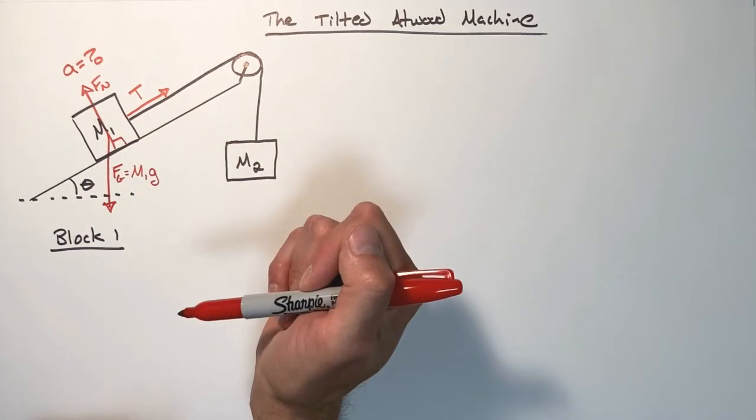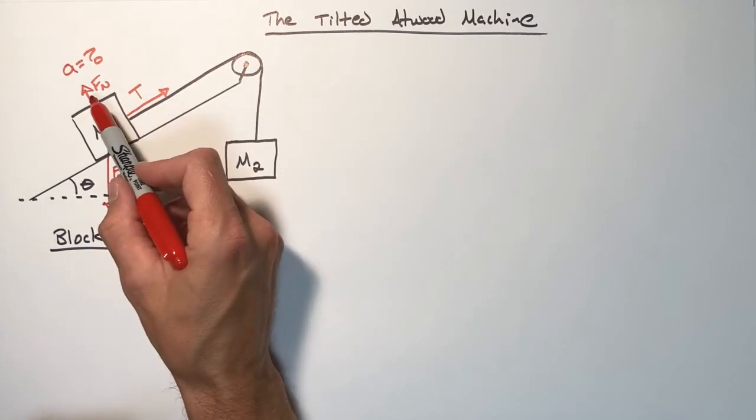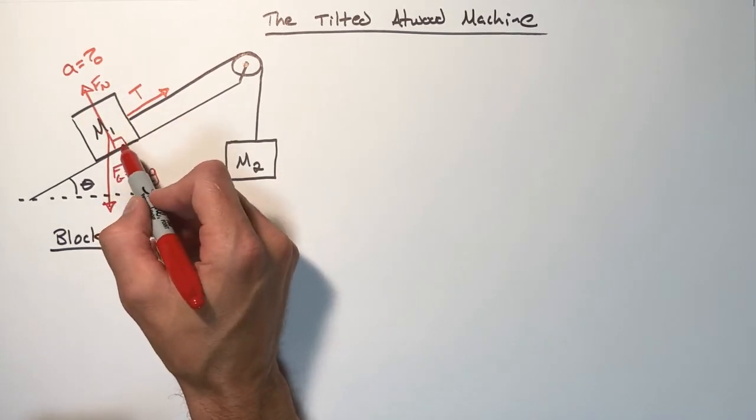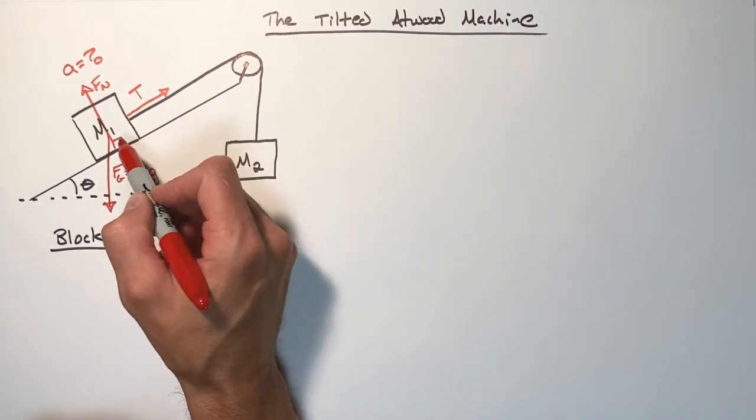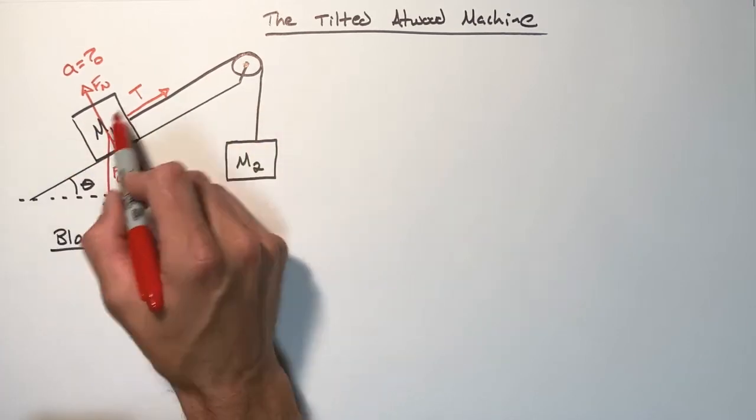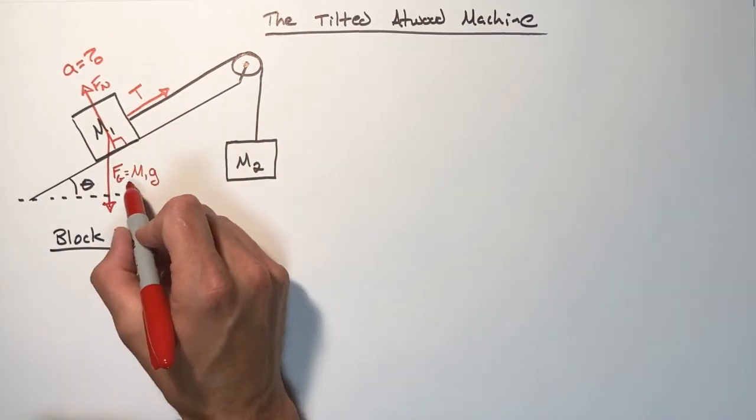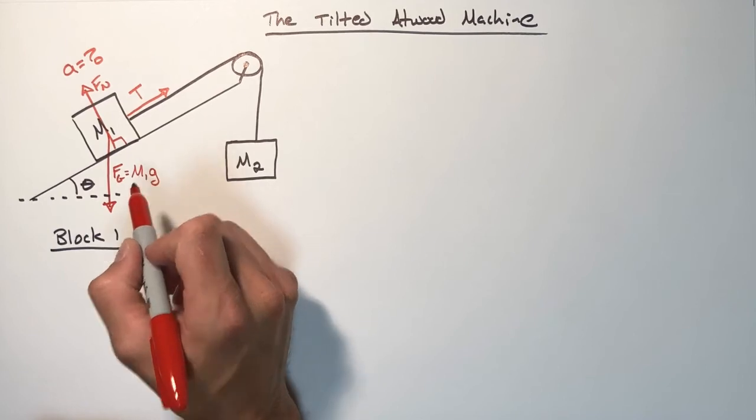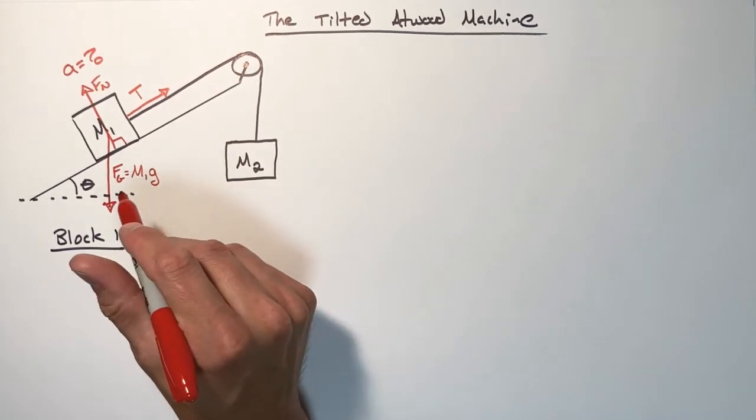So what we're worried about when we try to apply Newton's second law is we want to think about the forces and more importantly the components of forces that are parallel to the hill. Now it's easy enough to see that this tension in the string is parallel to the hill. But what about the other two? Well the normal force by definition is perpendicular to the hill. So it has no component parallel to the hill. Weight on the other hand we're going to have to take a little bit closer look at this.